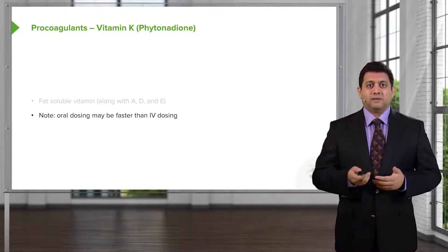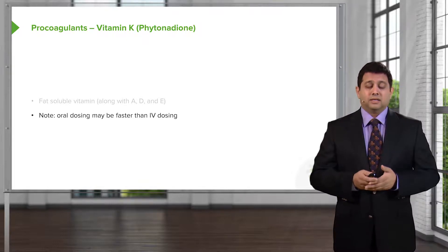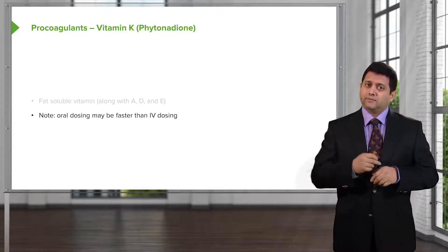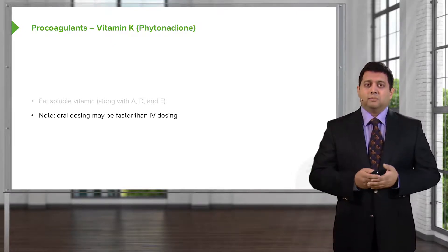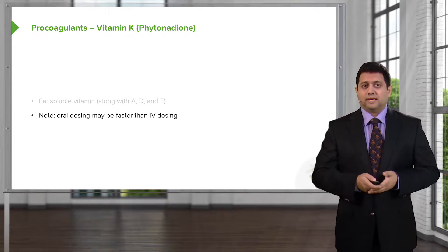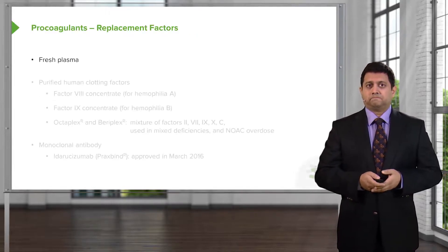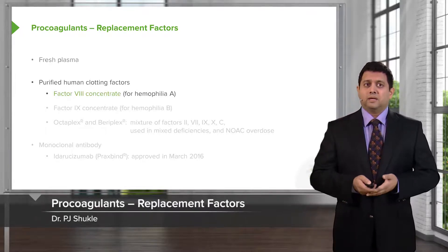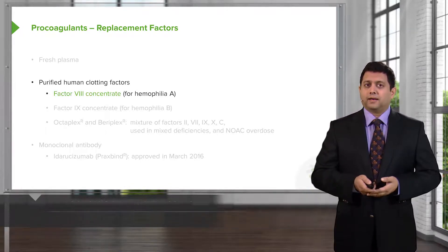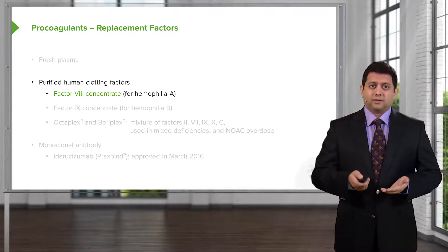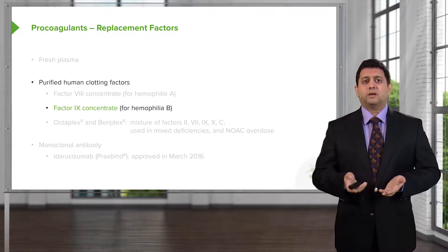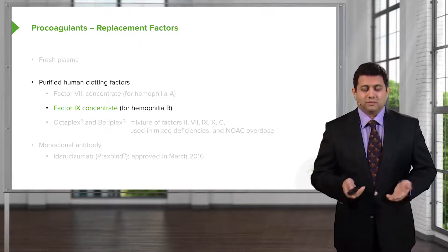Oral dosing may be faster than IV dosing. Vitamin K is activated through the liver — if you take it orally, it will actually work faster than if you give it in the vein, because it has to go through the liver to be activated. Replacement factors also include fresh plasma and purified human clotting factors. These can be factor VIII concentrates for patients who have hemophilia A, and factor IX concentrates for patients who have hemophilia B.